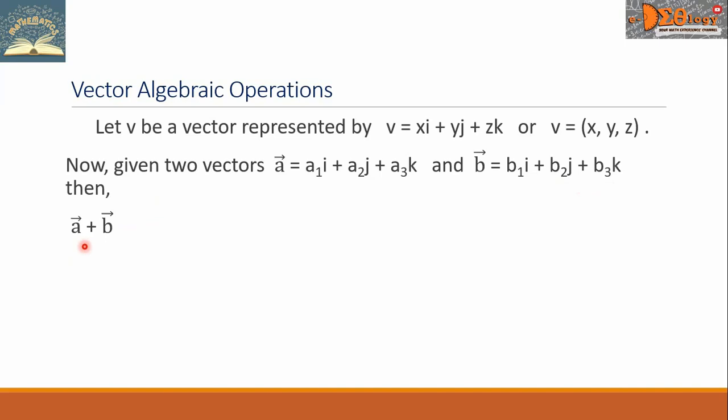Then, vector A plus vector B, this is addition of vectors, equals the quantity a sub 1 plus b sub 1 times i plus the quantity a sub 2 plus b sub 2 times j, plus the quantity a sub 3 plus b sub 3 times k.